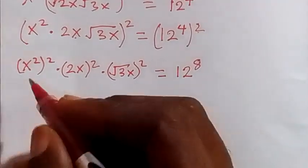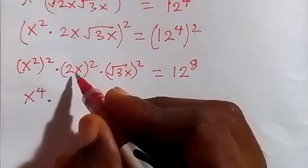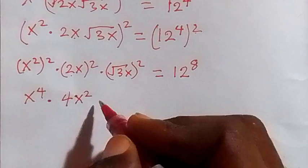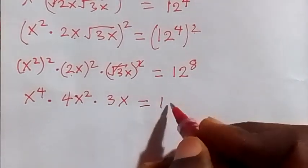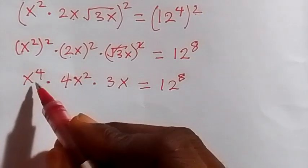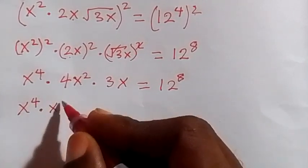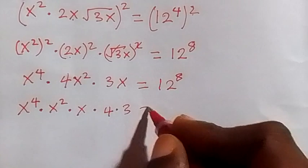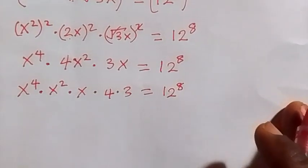Simplifying: x squared squared gives x to the power 4. We square 2 to get 4, and squaring x gives x squared. The square root of 3x squared cancels the square root, leaving 3x. So we have x to the power 4 times 4 times x squared times x times 4 times 4 times 3, equals 12 raised to the power 8.